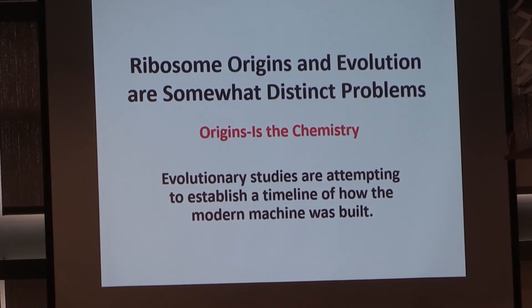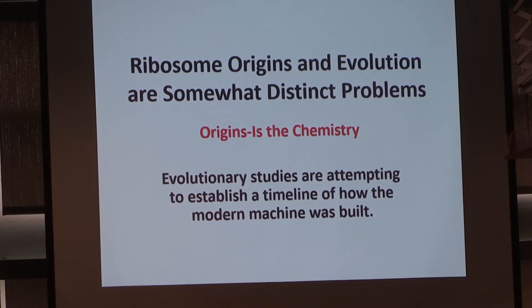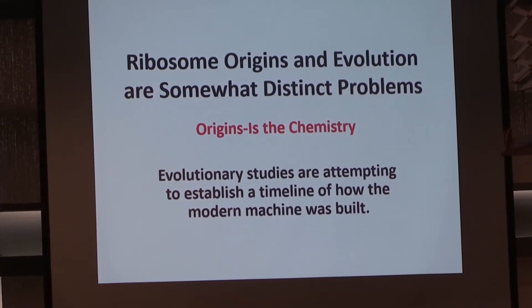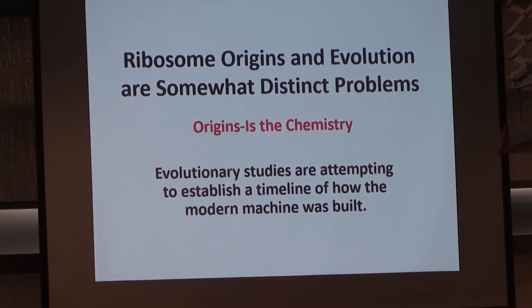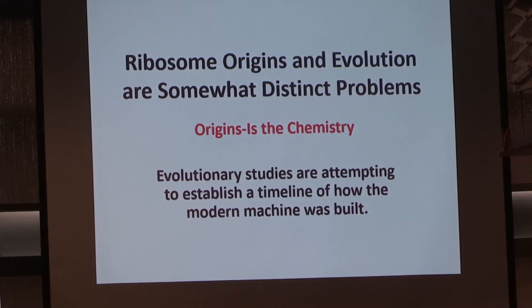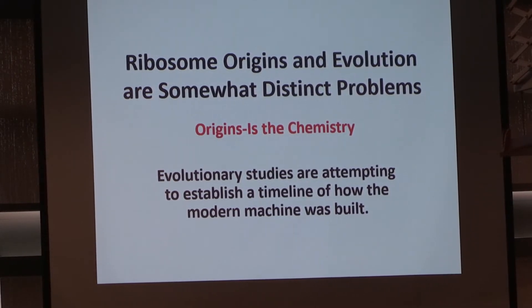It turns out that we've come to realize there are probably two distinct aspects of the study of ribosomes. One is where did this chemistry come from, and the other is what happened to the ribosome once it got started — the subsequent evolution of the ribosome. I'm going to talk about both, and I'm not going to solve either one.